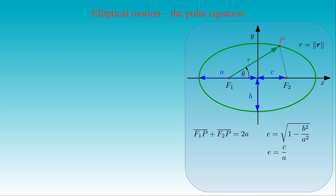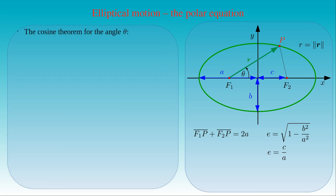Now we can apply the cosine theorem for the angle theta in the triangle P, F1, F2, which tells us that the square of 2 times A minus R is equal to R squared, plus the square of 2 times C, minus 4C times R times cosine theta.